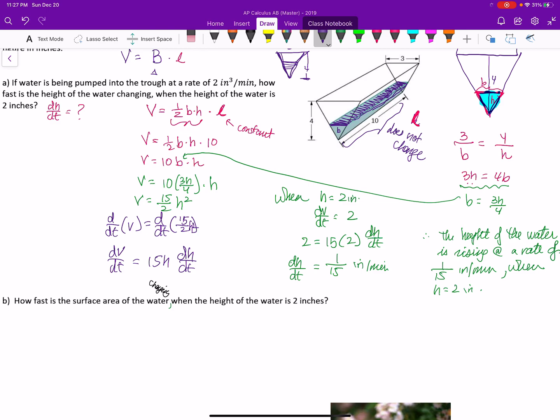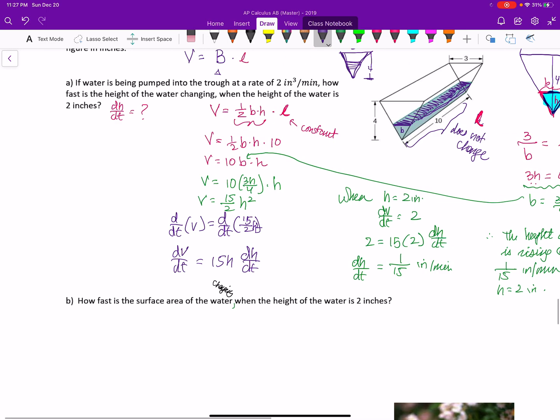So the area that we're talking about is going to be b times, it's a rectangle. The surface area is actually changing, but the piece that's changing is just the length or the width across there. But the 10 doesn't change. So the area is equal to 10b.